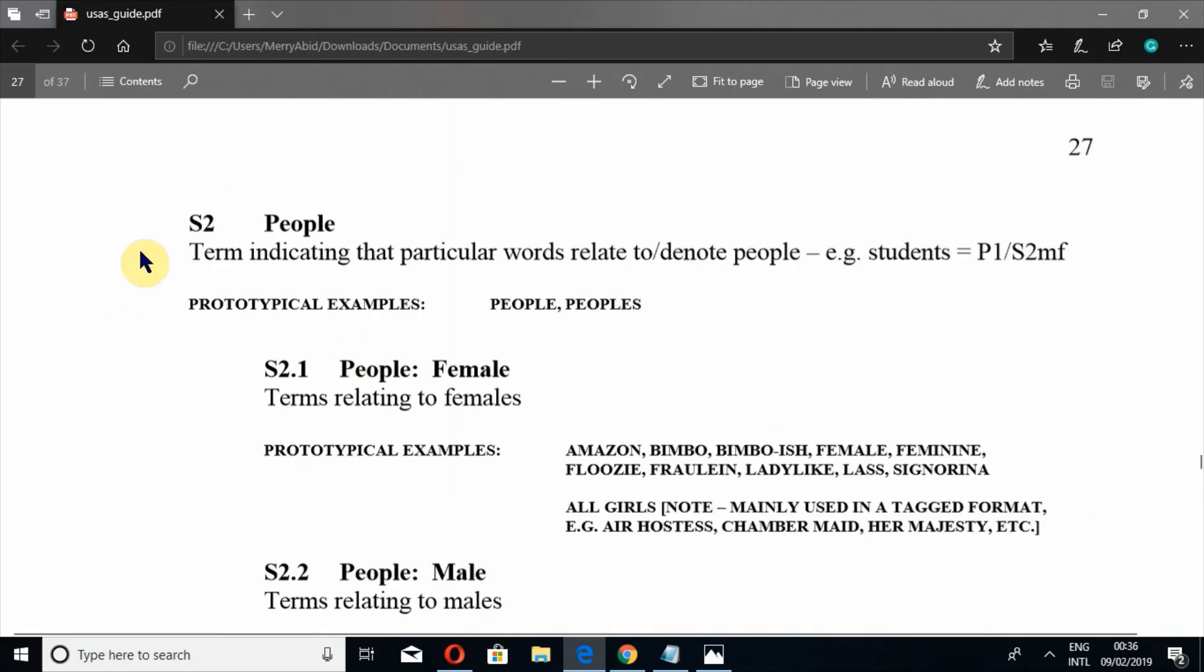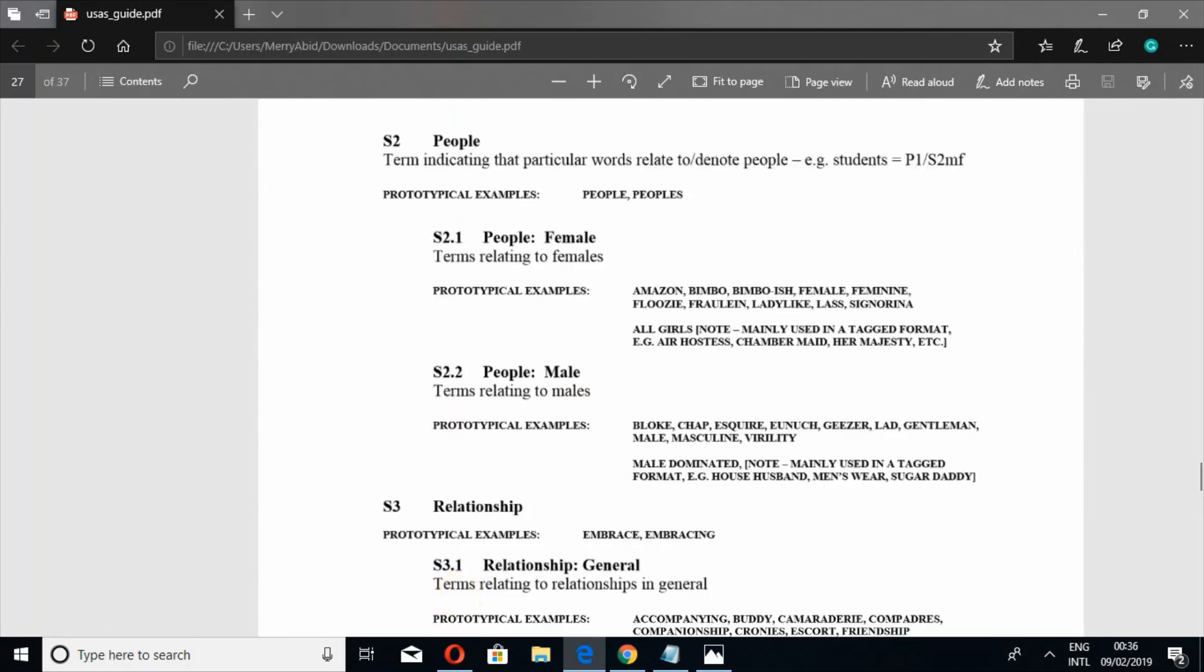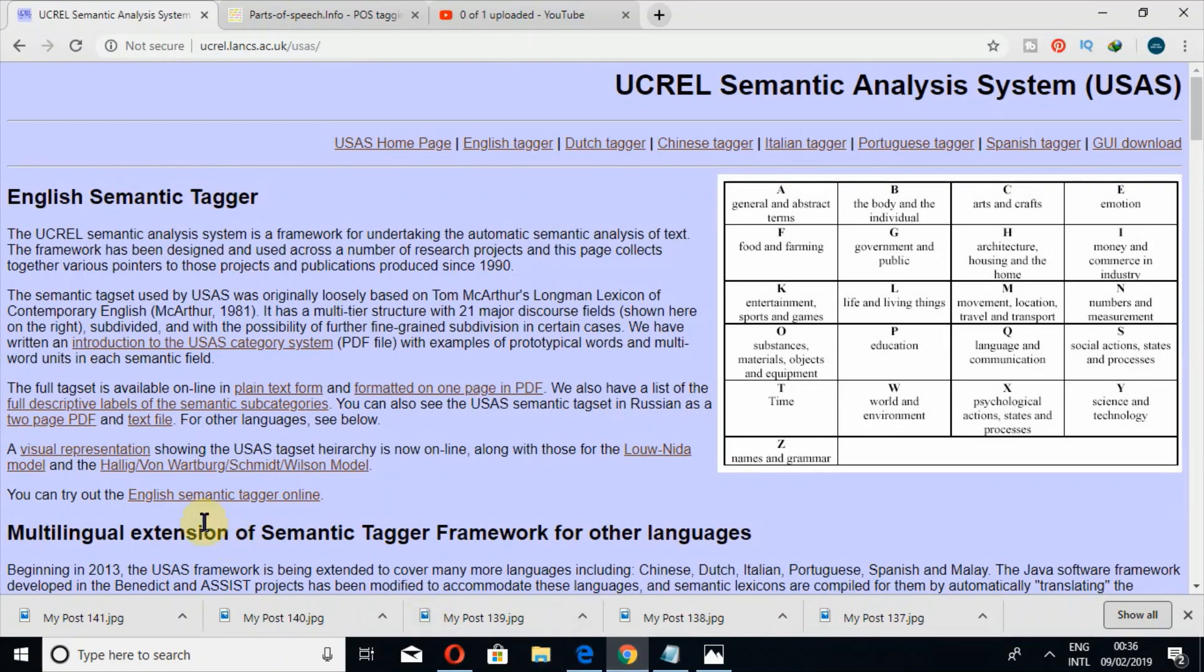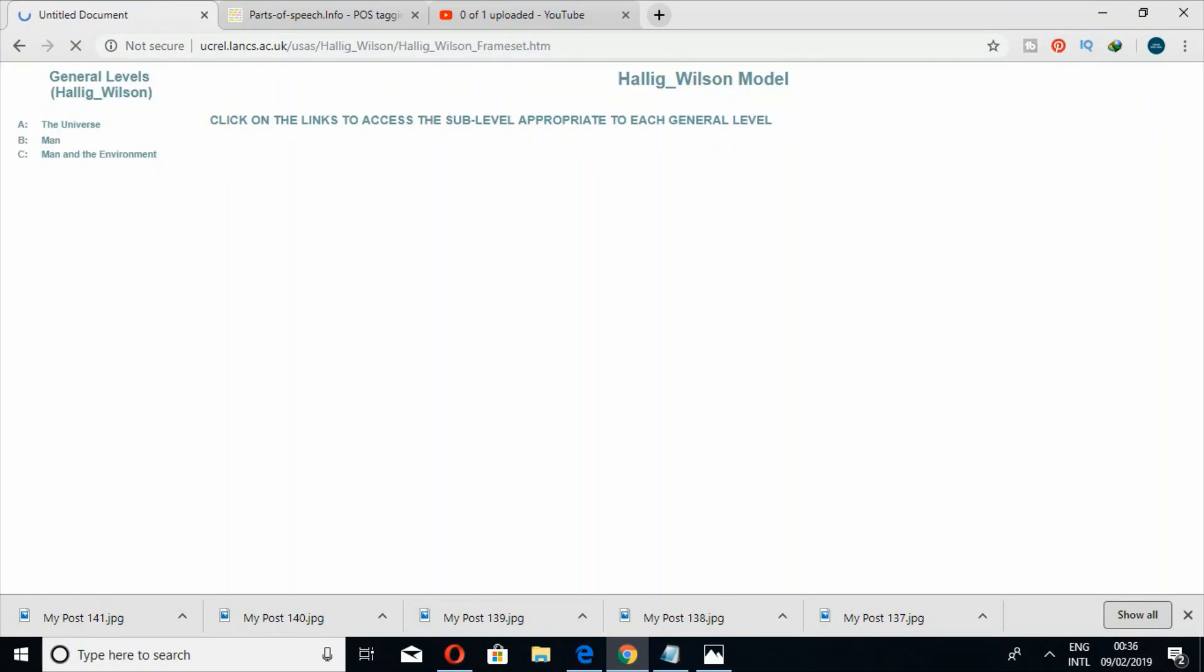I apologize for a bit long video. This is S2, so people. Admiral must be a people, a human. S2.1 was also given to admiral, so admiral could be a female or could be a male. In this way, this software, USAS semantic tagger which is online, will tag your data.